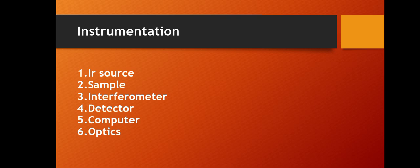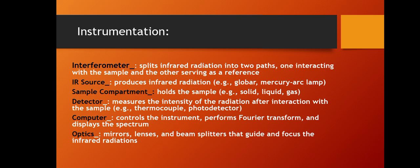Instrumentation: The components of an FTIR instrument include an IR source, sample compartment, interferometer, detector, computer, and optics. The interferometer splits IR radiation into two parts — one interacting with the sample and the other interacting with the reference compartment. Different IR sources used in FTIR include globar, mercury lamp, or clamp.